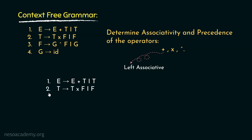Now observe the second rule: T can be rewritten as T into F or F. This rule contains the multiplication operator. Here the variable T is again reappearing as the leftmost variable in the right-hand side. So clearly this multiplication operator is also left associative.